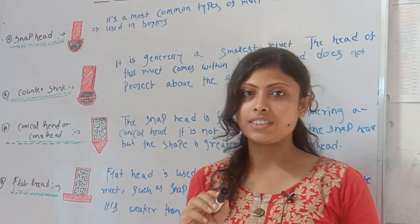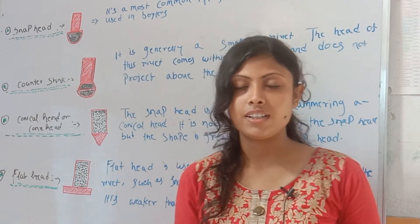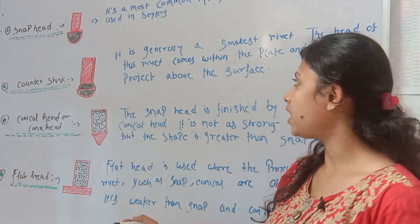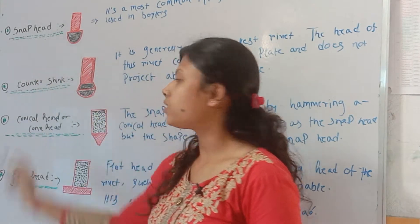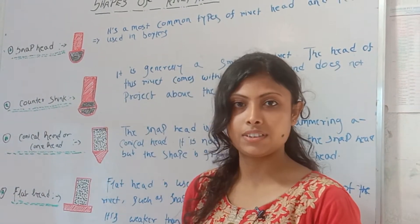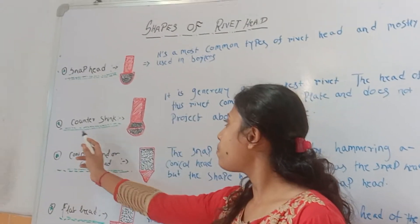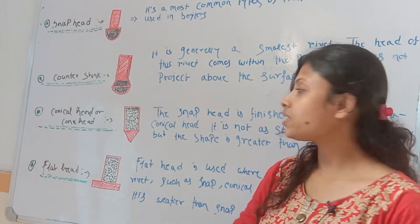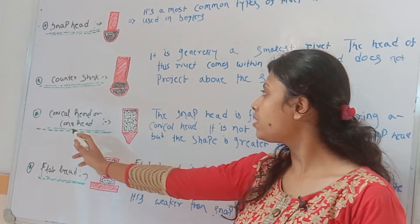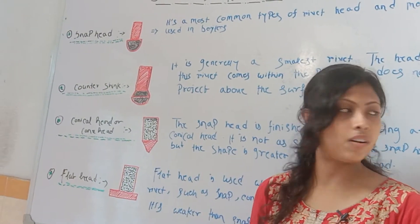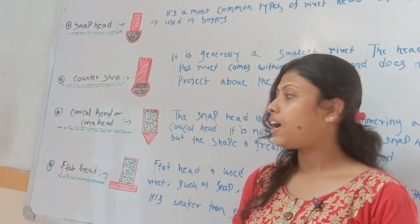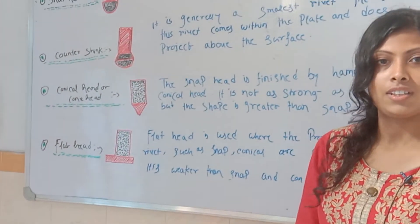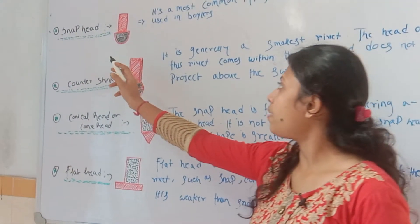We see the same rivet types. Number one is snap head, number two is countersink head, number three is conical head, and number four is the flat head.